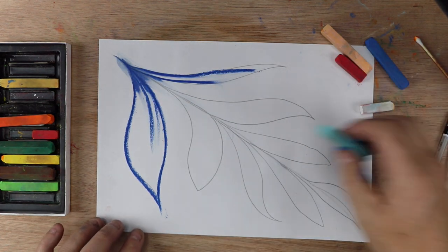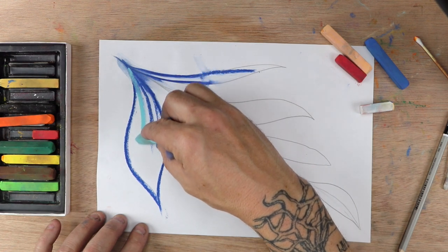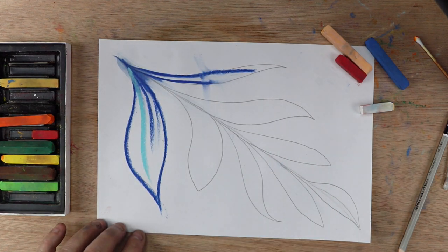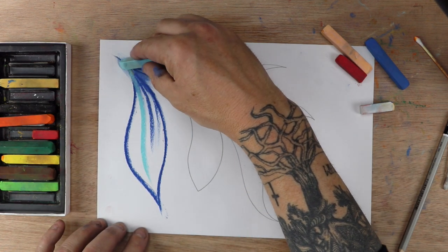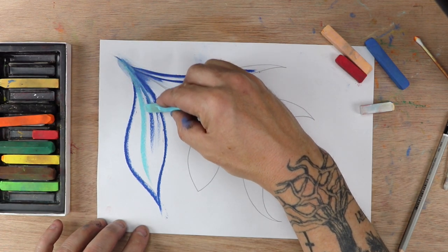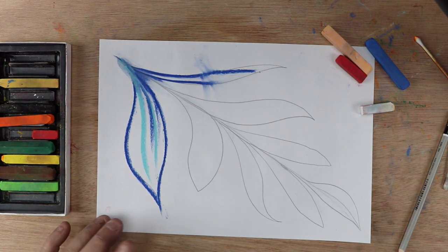And this does end up looking like a leafy type thing, which is why I avoided doing green. But it doesn't matter. If it looks more realistic like leaf form, then that's fine. If it looks more abstract, then that's fine too.